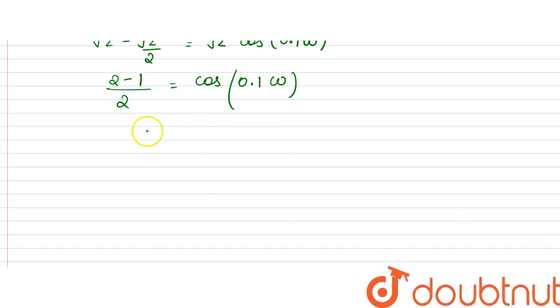So here, it would be cos 0.1 omega would be equal to half, which is actually equal to cos pi by 3.